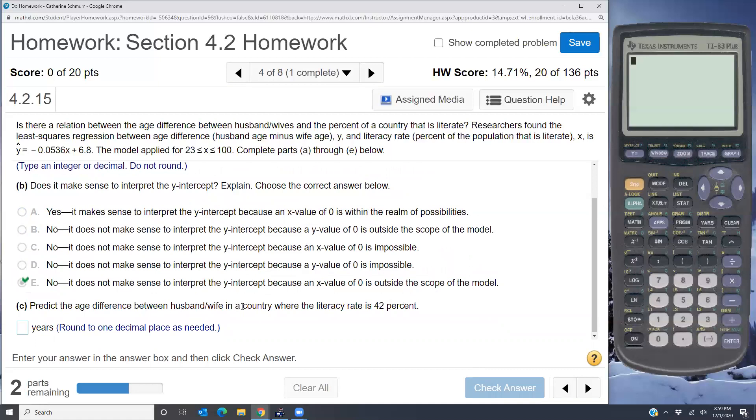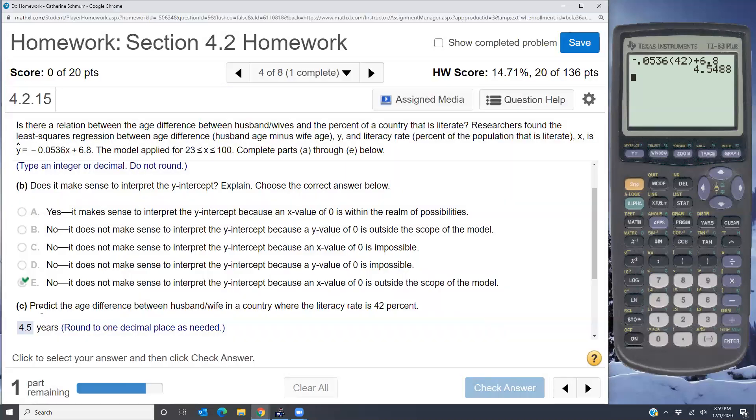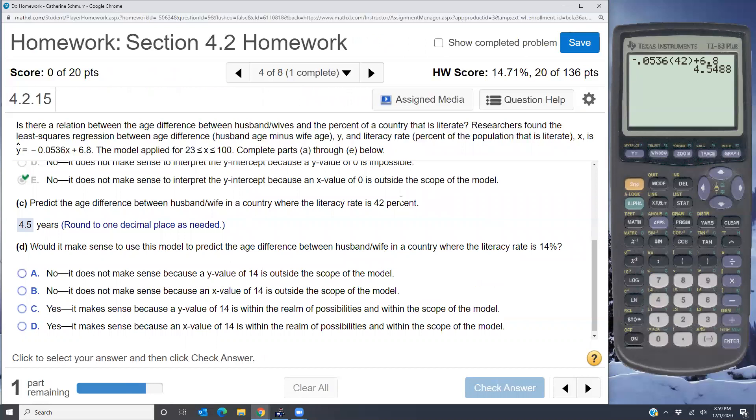Predict the age difference between husband and wife in a country where the literacy rate is 42%. Now 42% is between 23 and 100, and so I can use the equation to make my prediction. So I'm going to put that in negative 0.0536 times 42%, so 42% of the population is literate, plus 6.8. So I'm plugging that into the equation. And they say round to one decimal place, so I'm going to say 4.5 years. So four and a half year age difference between husband and wife in a country where the literacy rate is 42%.